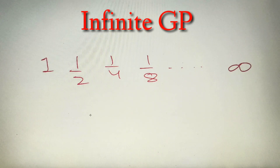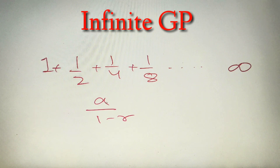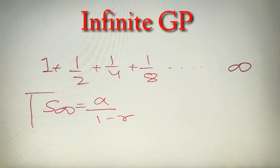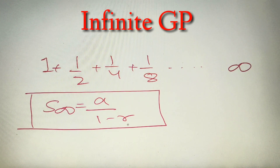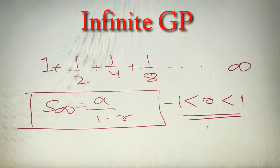The main topic of today's video is to find the sum of an infinite GP. We cannot simply add all the terms because it is not practically possible to add infinite terms. So we use the formula: S∞ = a / (1 − r), where a is the first term and r is the common ratio. One important restriction is that r must lie between −1 and 1 in order to apply this formula.